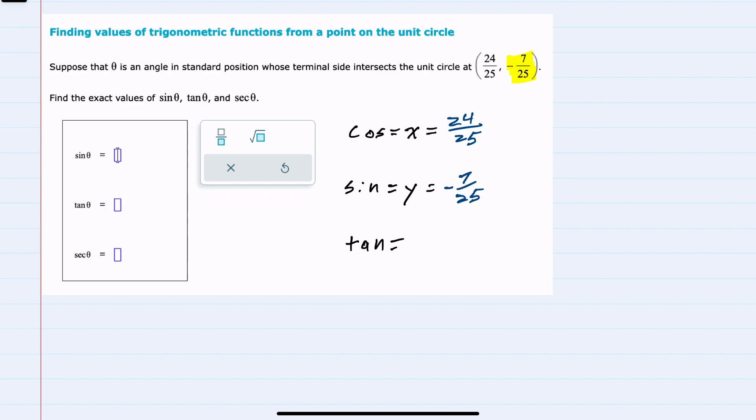Tangent is defined as being our sine over cosine. And since sine is y and cosine is x, it would be y over x. Since I have a y value and an x value,